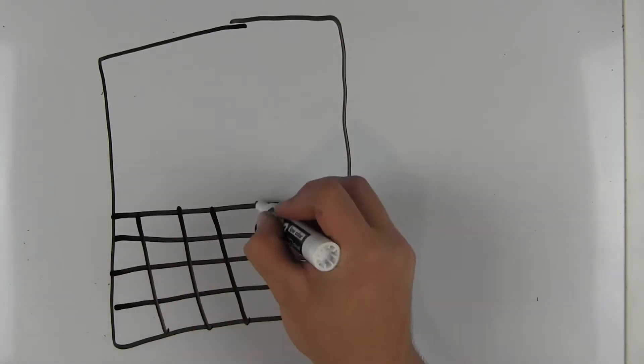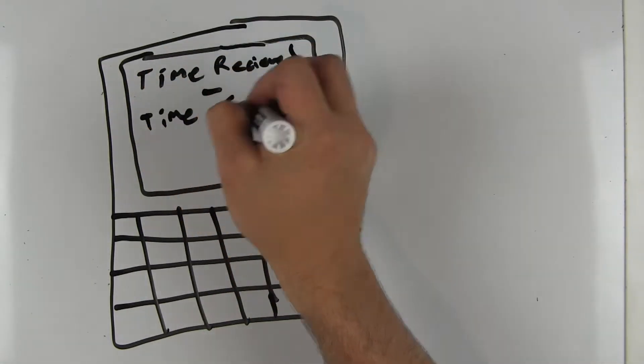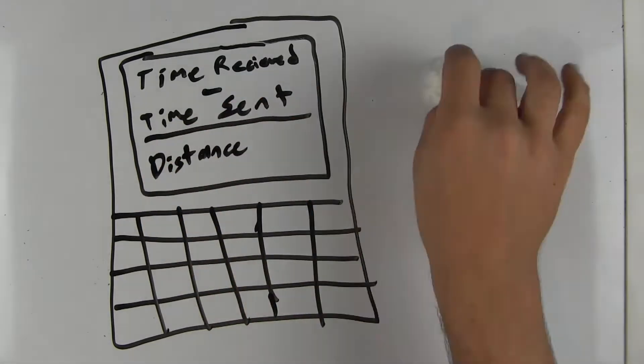The GPS device then subtracts the time the signal was sent from when it was received and using this and the knowledge of how fast the signal was traveling, it can find the distance from the satellite.